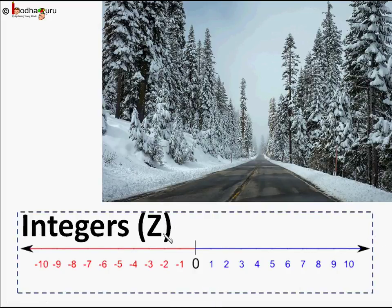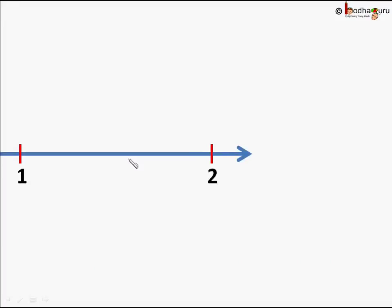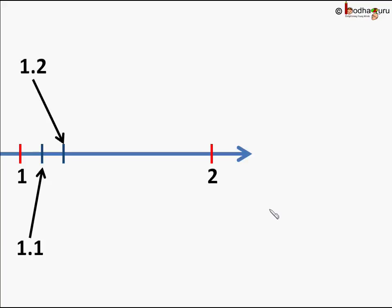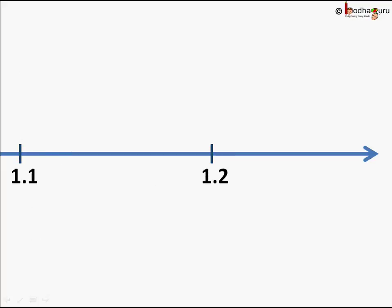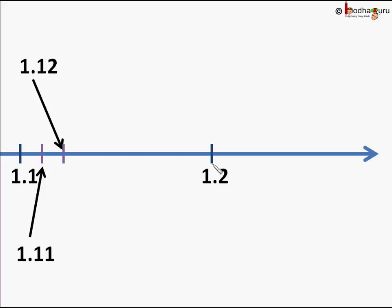Now if we look at the number line there is a gap between 1 and 2. If we zoom in further, there can be decimal numbers in between like 1.1, 1.2 and so on. If we zoom in further we can see a gap between 1.1 and 1.2, with numbers like 1.11, 1.12 and so on. Zooming further, we will find numbers between 1.11 and 1.12 like 1.111, 1.112 and so on.